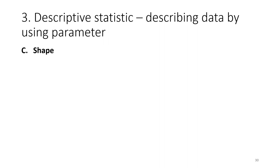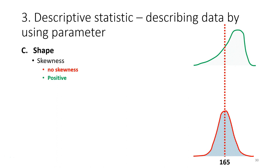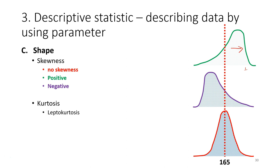The last parameter we use is to describe the shape. For a normal distribution, with the center at 165, the first characteristic is skewness. If the peak of the curve is in the middle it is not skewed. We can also have a positively skewed distribution where the peak skews to the right, or a negatively skewed distribution. We can also describe the shape in terms of kurtosis — a leptokurtic distribution is very narrow, while a platykurtic distribution is quite flat.